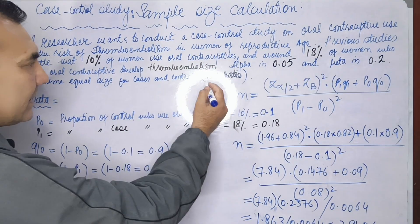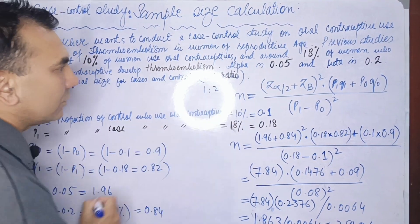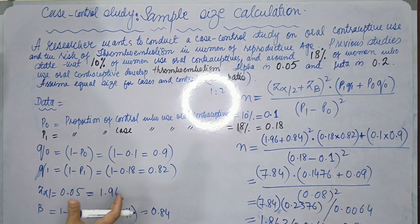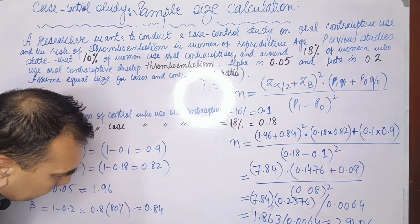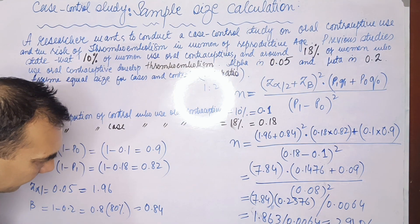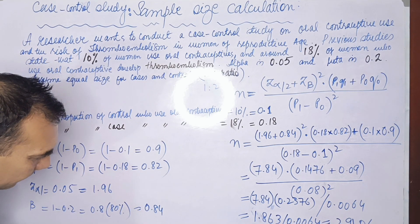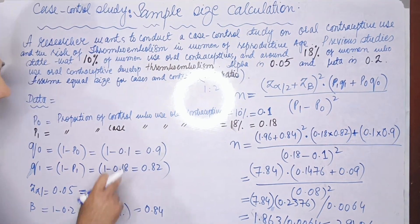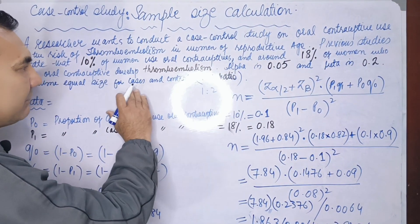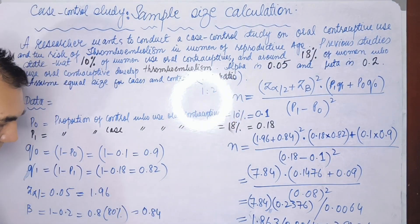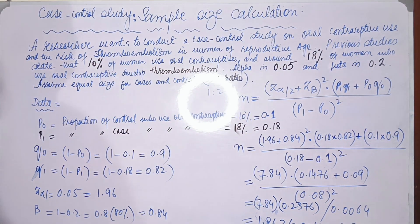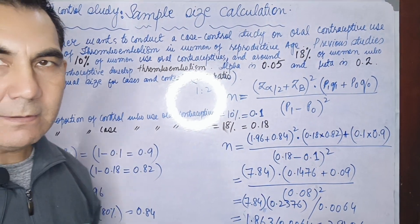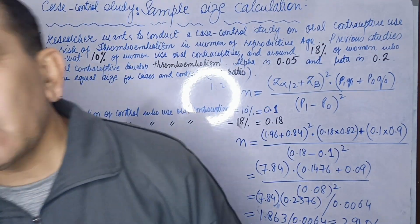If the researcher changes the cases-to-controls ratio to one-to-two, then for the controls we multiply 291 by two, giving 582 controls. So for a 1:2 ratio, the researcher needs 291 cases and 582 controls.